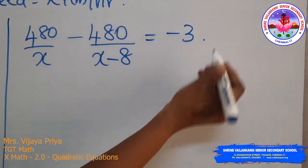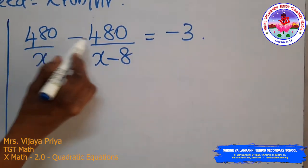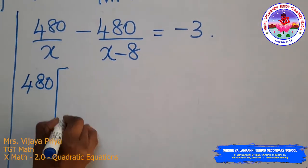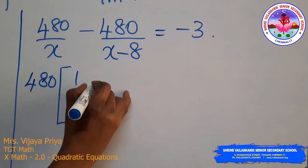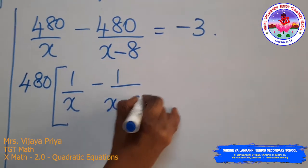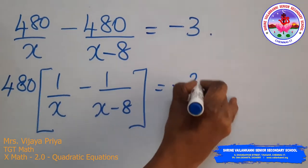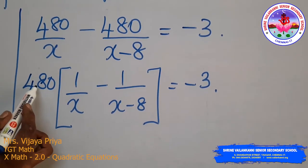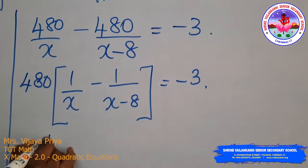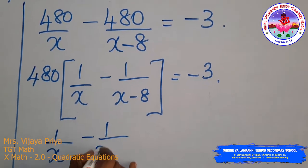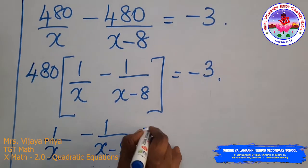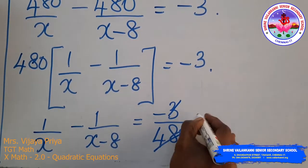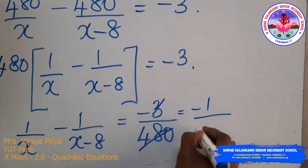Dividing both sides by 480: 1/x − 1/(x − 8) = −1/160. Taking LCM as x(x − 8), the numerator becomes (x − 8) − x = −8, giving −8/[x(x − 8)] = −1/160.